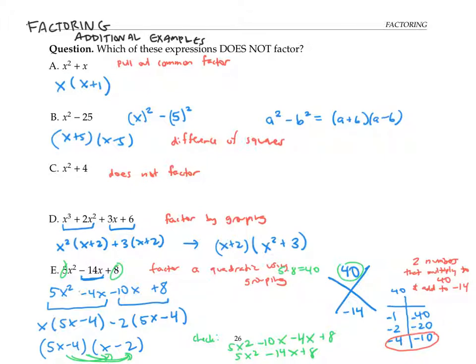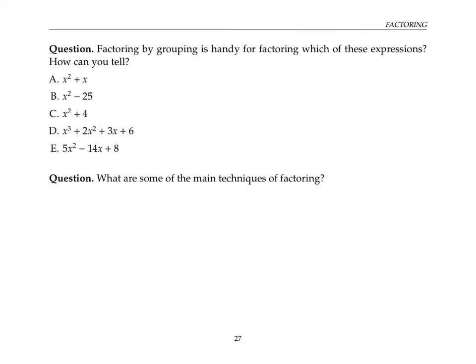And all of these factor except for the sum of squares. So we saw the factoring by grouping as handy for factoring this expression here. It was also handy for factoring the quadratic indirectly, after splitting up the middle term into two terms.